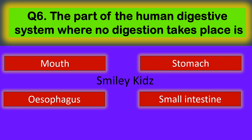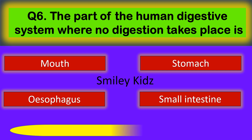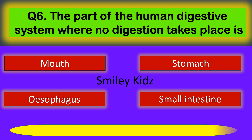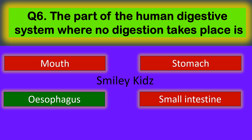Question number 6. The part of the Human Digestive System where no digestion takes place is... Your options are Mouth, Stomach, Esophagus, and Small Intestine. The correct answer is Esophagus. The part of the Human Digestive System where no digestion takes place is the Esophagus.